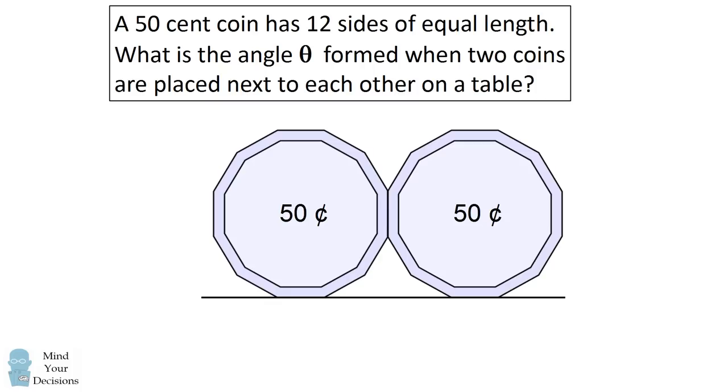A 50 cent coin has 12 sides of equal length. What is the angle theta formed when the two coins are placed next to each other on a table?